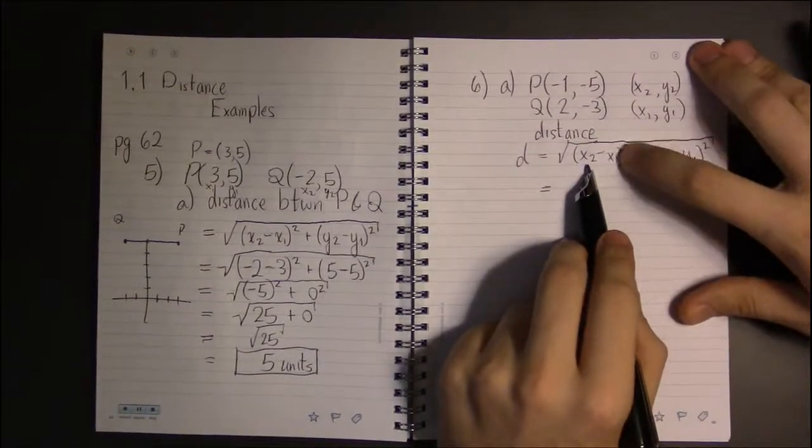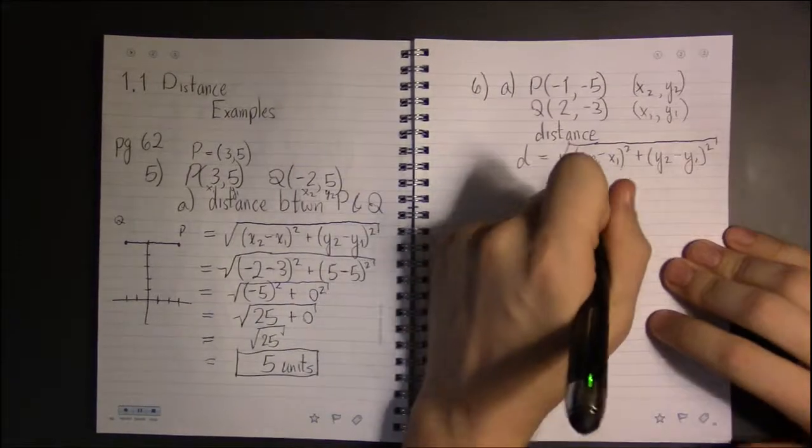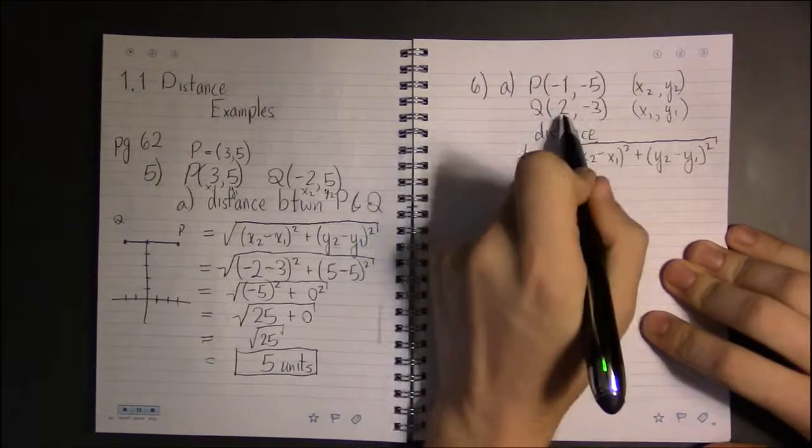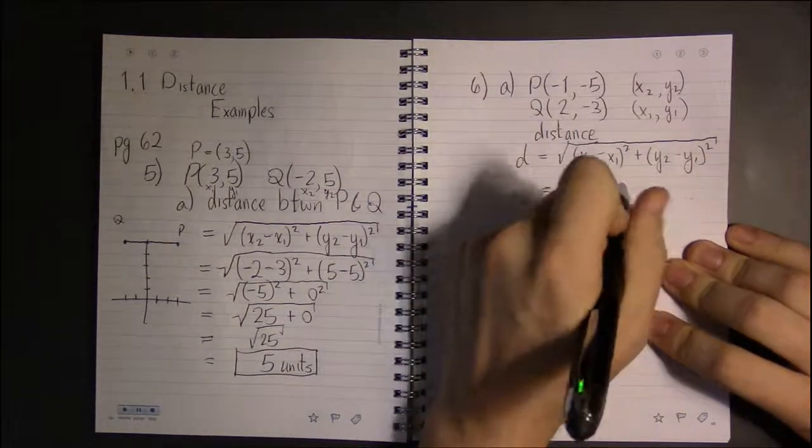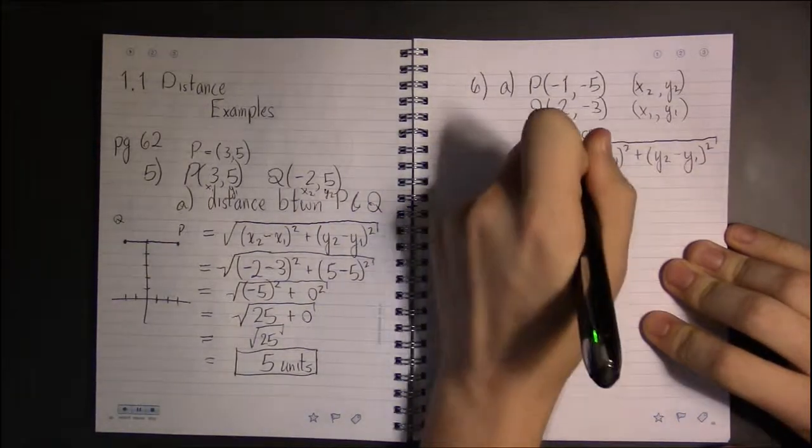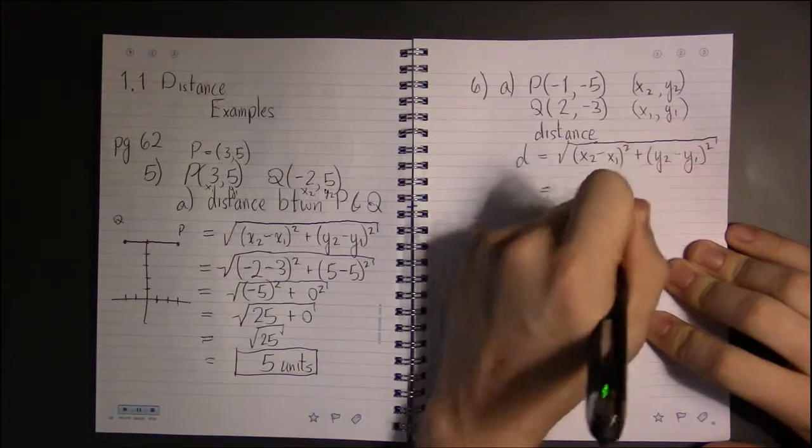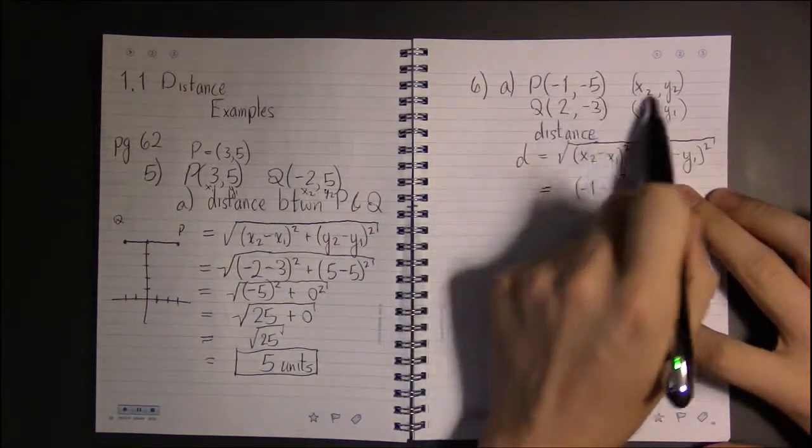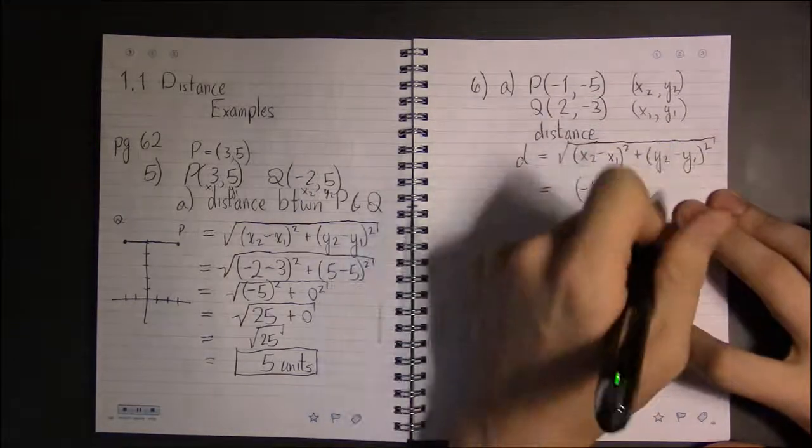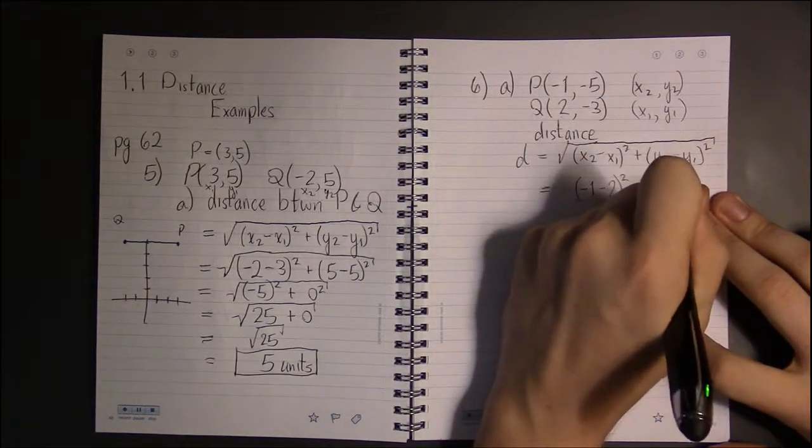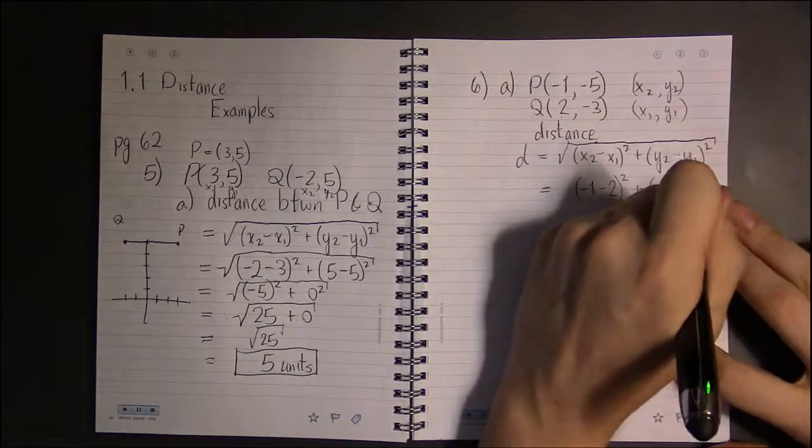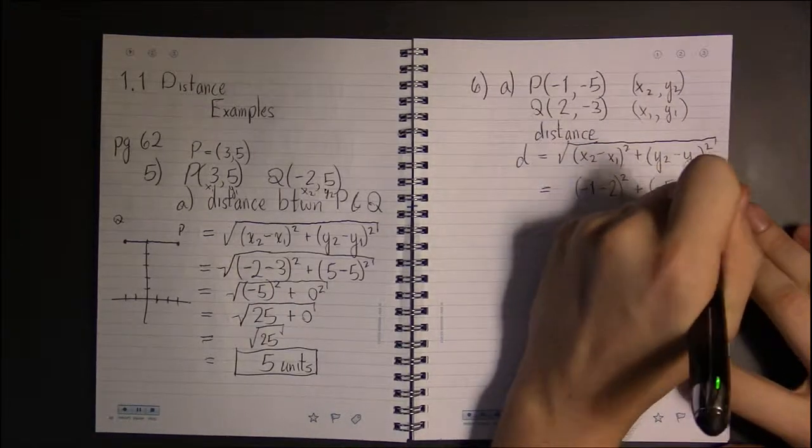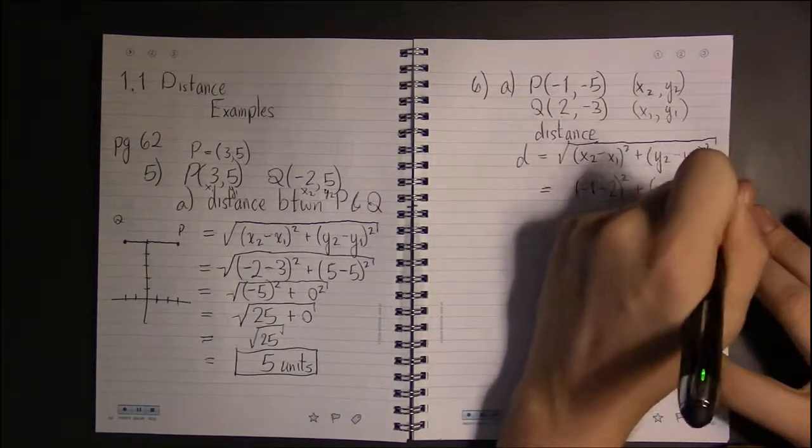So if we look here, let's see. Our x2 now is -1, and then we have to take away x1, so 2.